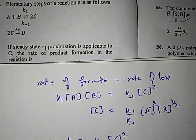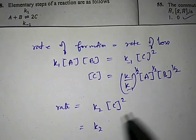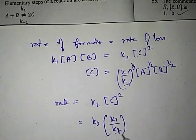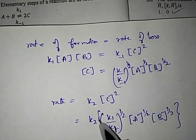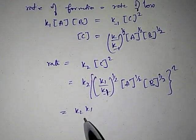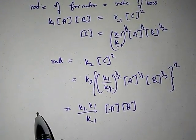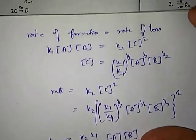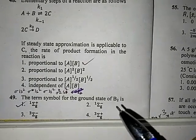Substituting the value of C into the rate expression: rate = k₂ · (k₁/k₋₁) · [A][B]. When you square the expression for C, the square root cancels and you get rate = k₂(k₁/k₋₁)[A][B]. The rate is proportional to [A][B], both with power 1, so the correct option for this question is option number one.